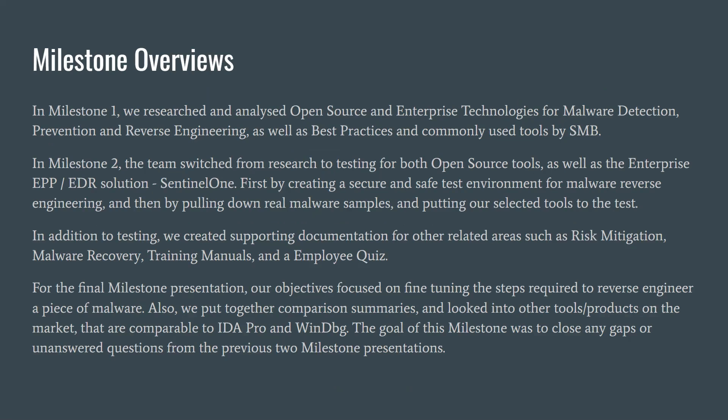In our milestone overviews, the first milestone focused mostly on research for both open source and enterprise technologies, and we built supporting documentation for best practices and commonly used tools. In milestone two, we switched from research to execution. We installed and tested SentinelOne, the EPP-EDR solution we selected, as well as both open source technologies, and started utilizing them to reverse engineer real pieces of malware. In our final milestone presentation, we concluded our findings and provided an overview of the whole capstone project.